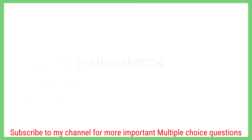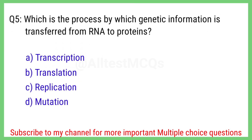Question number 5. Which is the process by which genetic information is transferred from RNA to proteins? The right answer is option B. Translation.